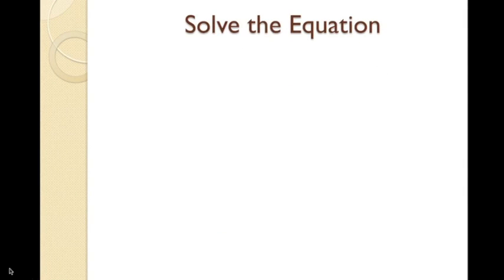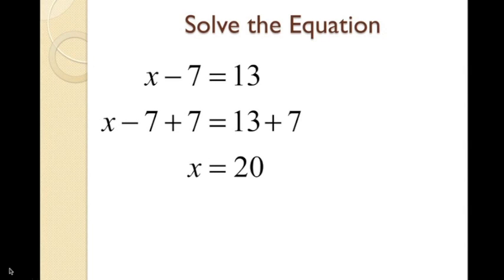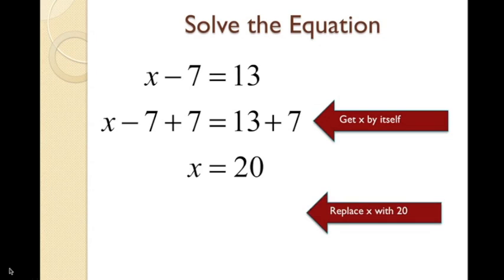We can solve the equation by using what we learned when solving linear equations. Now that we have our equation, we can solve it by adding 7 to both sides and combining the like terms to get x equals 20. To check if our answer is correct, substitute 20 for x and solve the equation.